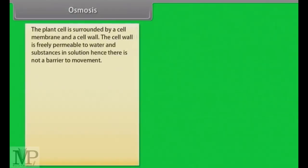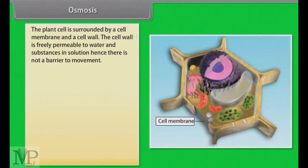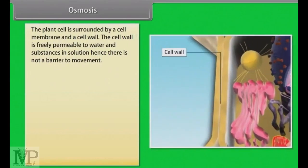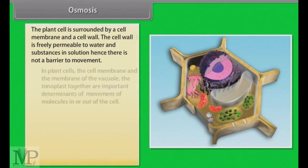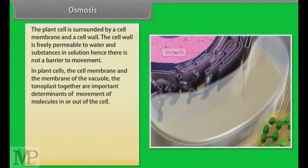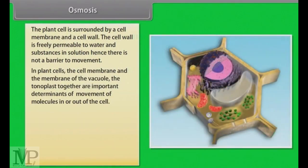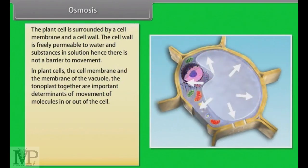Osmosis. The plant cell is surrounded by a cell membrane and a cell wall. The cell wall is freely permeable to water and substances in solution. Hence, there is not a barrier to movement. In plant cells, the cell membrane and the membrane of the vacuole, the tonoplast, together are important determinants of movement of molecules in or out of the cell. Now, let us know about osmosis.